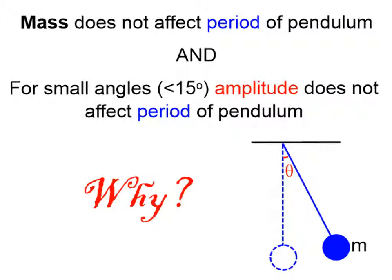Mass is not in our equation. Mass does not affect the period of a pendulum. Also amplitude has no part of this equation either. It does not affect the period of a pendulum for small angles. And when we say small angles we mean angles that are less than 15 degrees. So why is this true?